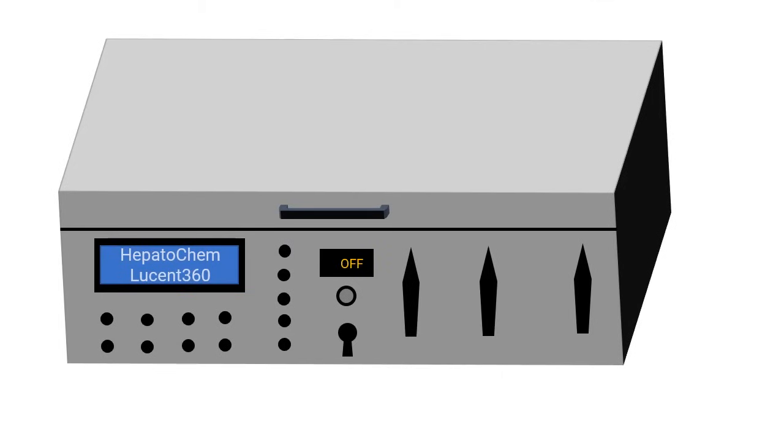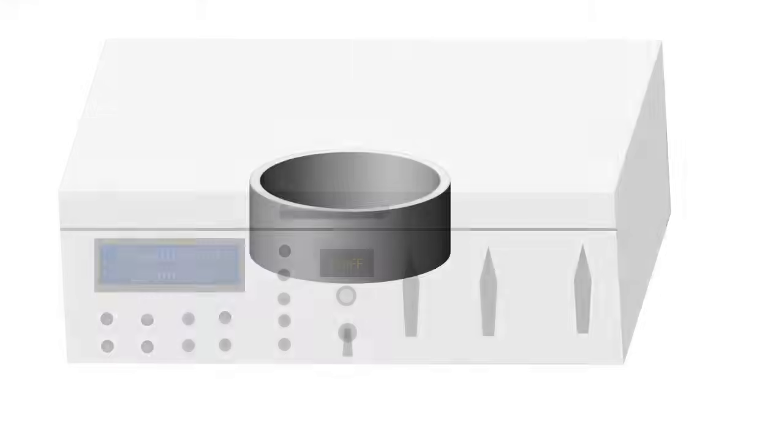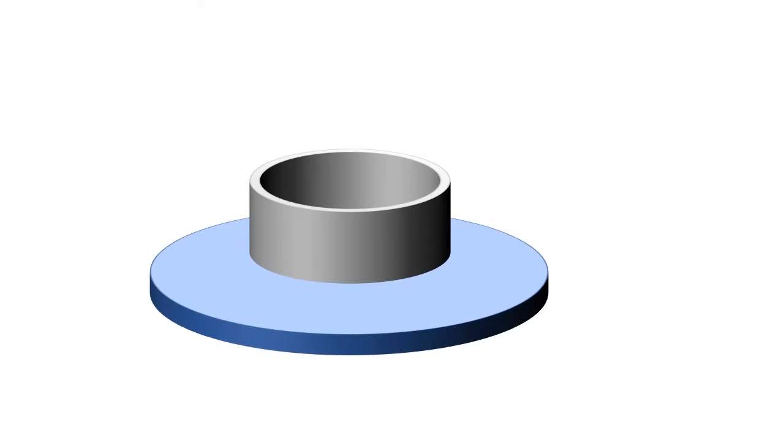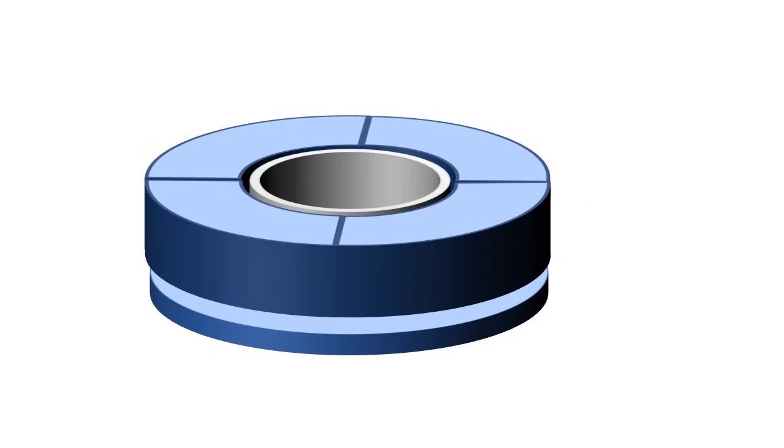Check out this illustration of the Lucent360. You'll notice that inside the device is our thermally insulated reaction chamber. The chamber sits on top of a powerful disc-shaped LED module, while the chamber's exterior walls are surrounded by an additional four LED light modules.